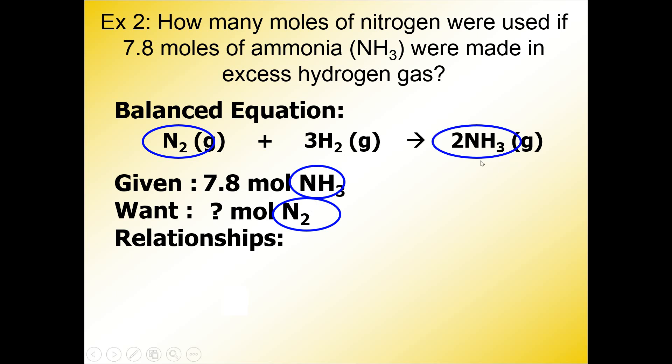For every 2 moles of NH3, I have 1 mole of N2. So there is my mole-to-mole ratio between those two substances in the given and in the want.